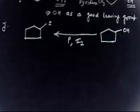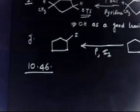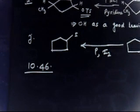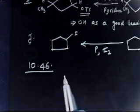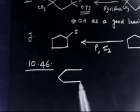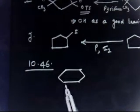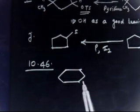Let us discuss problem number 10.46. This problem says: predict the major product including stereochemistry, so this time stereochemistry is also important. When cis-3-methylcyclohexanol reacts with the following reagents — let me show you the structure of cis-3-methylcyclohexanol.